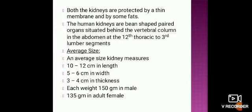The human kidney is a bean-shaped paired organ situated behind the vertebral column — the backbone — in the abdomen, at the level of the 12th thoracic to the 3rd lumbar vertebra. The thoracic vertebrae are the chest vertebrae, while the lumbar vertebrae form the lower backbone.